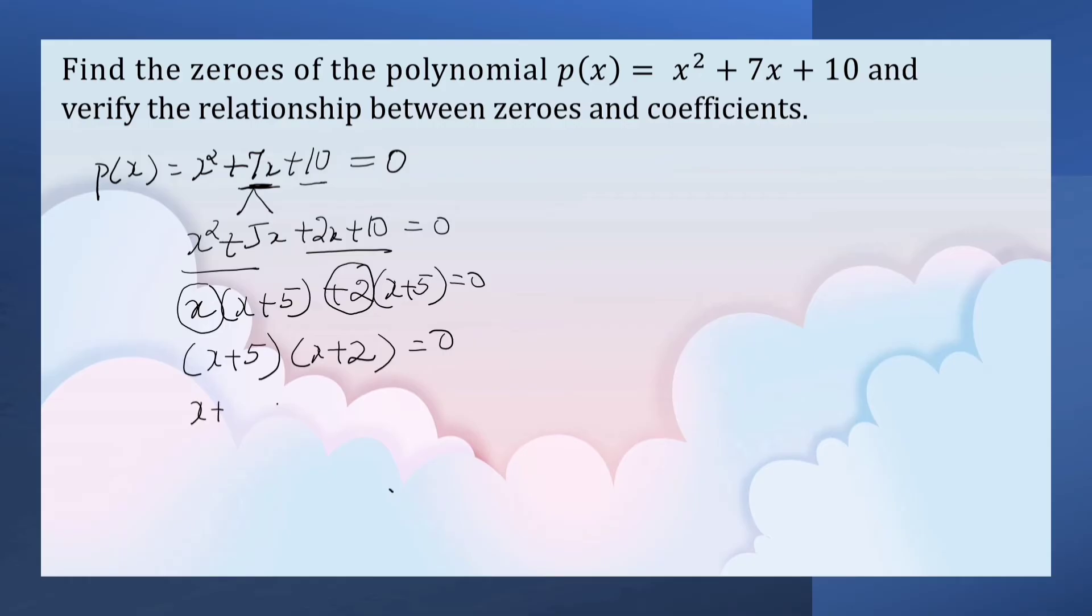x + 5 = 0 or x + 2 = 0. So x = -5 or x = -2.